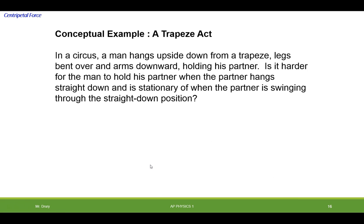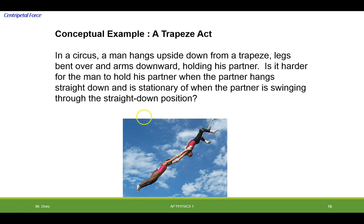We have a circus. In a circus, a man hangs upside down from a trapeze. His legs are bent over and his arms are hanging downward, holding up his partner. Is it harder for the man to hold the partner when the partner hangs straight down and is stationary? Or when they're swinging?